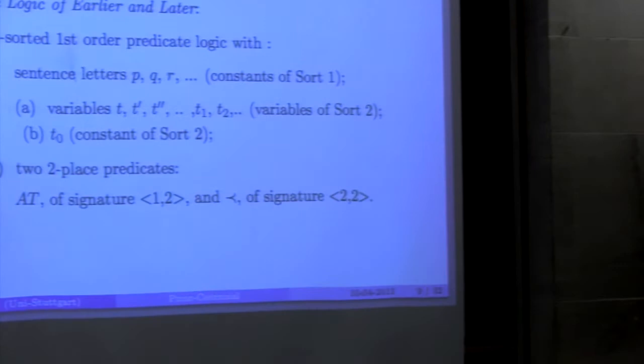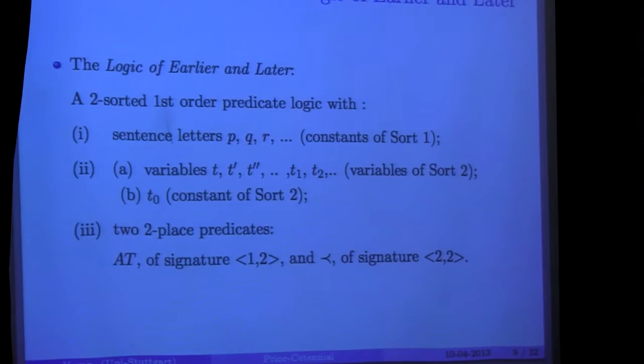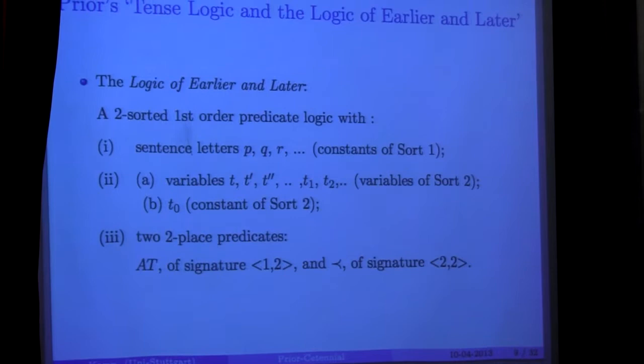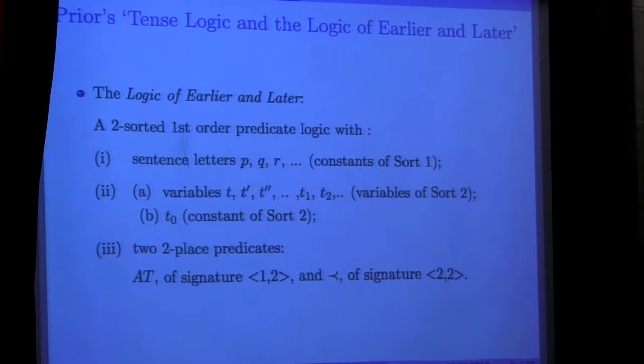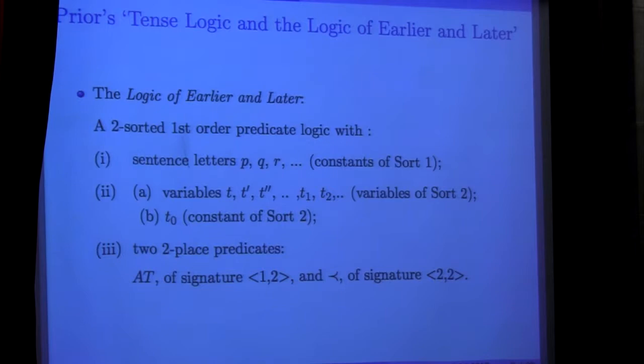So, the logic of earlier and later, I abbreviated this LEL, does, in a way I'm going to explain, for Prior's PF calculus—and the PF calculus I'm talking about is just propositional logic with its classical connectives and these two tense operators, P of course for 'it was the case that,' and F for 'it will be the case that.' There is a sense in which what Prior does in this paper, and what he does with this logic of earlier and later, is quite similar, I'd like to contend, to what one can accomplish with the model theoretic method that Cocchiarella applied to tense predicate logic in his dissertation.